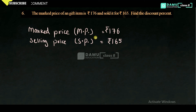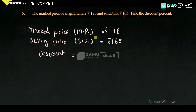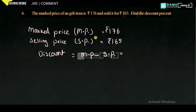So what is meant by discount? We give some lesser amount — that means they are going to decrease the price. The maximum retail price is like the market price. So MP minus SP gives the discount amount. Market price is 176, selling price is 165, so you get 11 rupees of discount. They sell at 165 giving an 11 rupee discount.